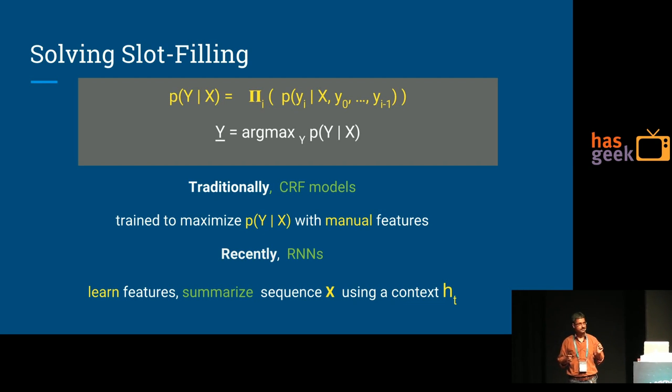Traditionally, before deep learning was applied to this problem, conditional random fields were the popular choice to do that. They try to maximize given manual features—mostly syntactic features, uppercase, lowercase, POS tagging and so on. Recently, in the period of the last four to five years, RNNs have taken over like other fields. They perform much better than CRFs. They learn the features automatically.